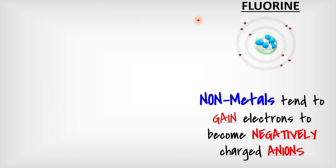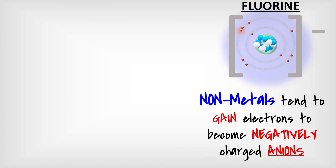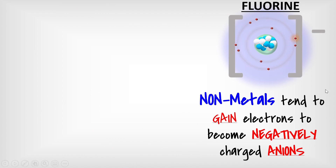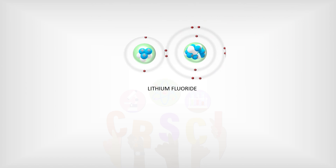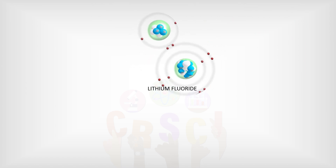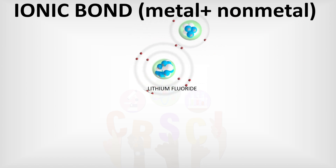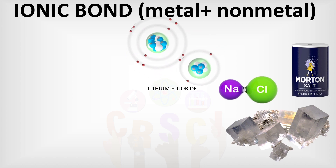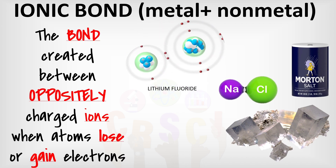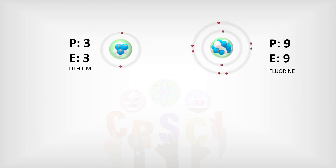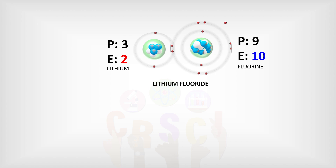It accepts the one electron. Absolutely — metals tend to lose electrons and become positively charged cations, whereas non-metals gain electrons to become negatively charged anions. As we discussed, opposite charges attract, so the lithium ion and the fluorine ion attract one another to become lithium fluoride. This is called an ionic bond — just what salt does in sodium chloride: a bond created between oppositely charged ions when atoms lose or gain electrons.